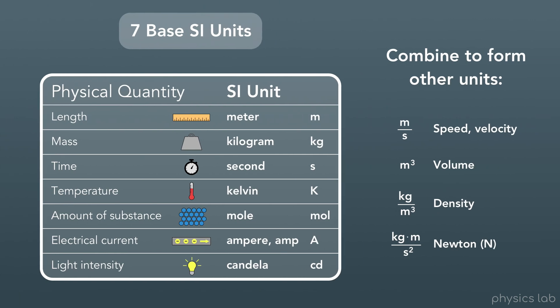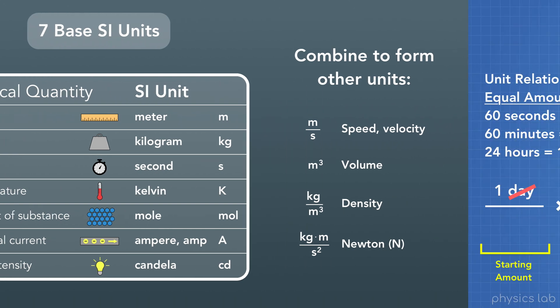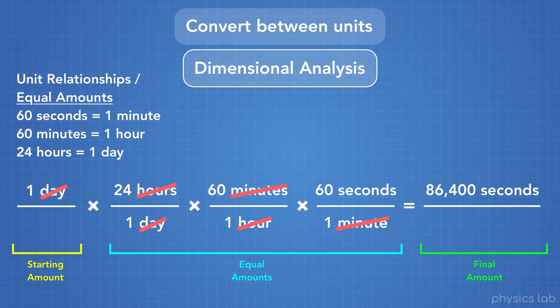Next, we covered the seven base SI units. We also know that we can combine those units to form other units. Next, we learned how to convert a number from one unit to a different unit, using a method we call dimensional analysis.